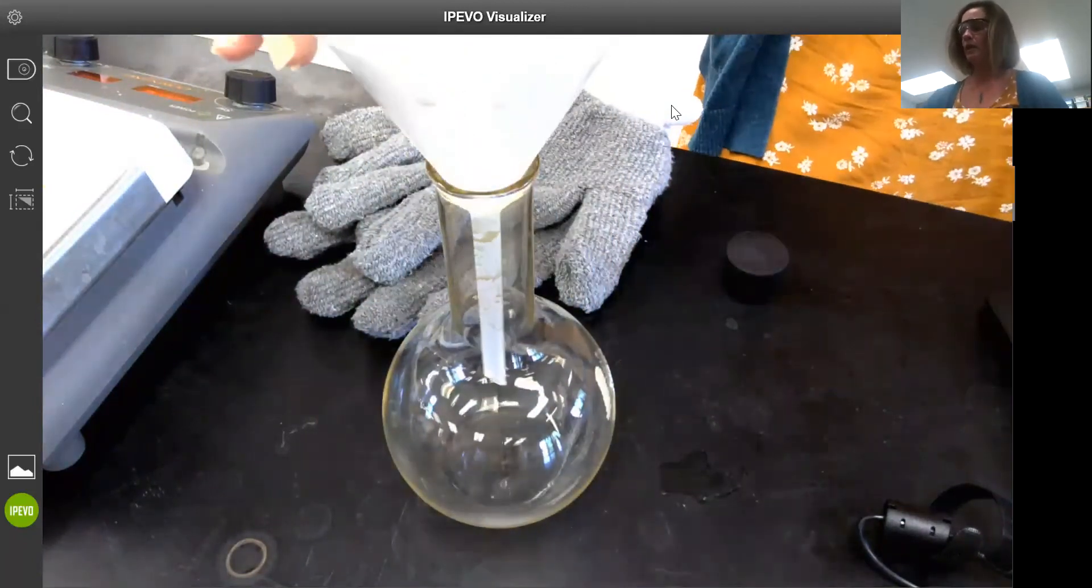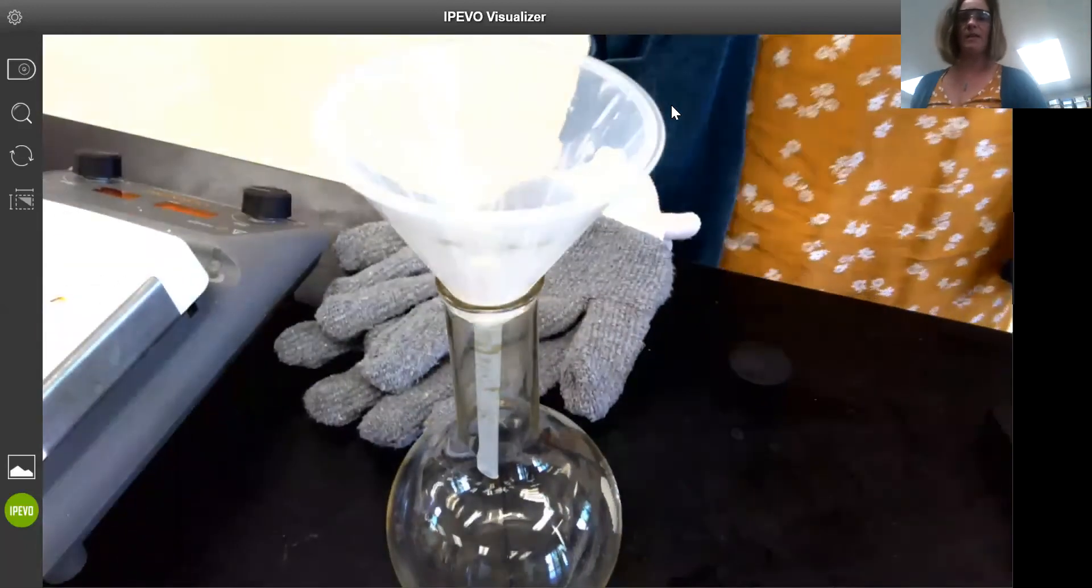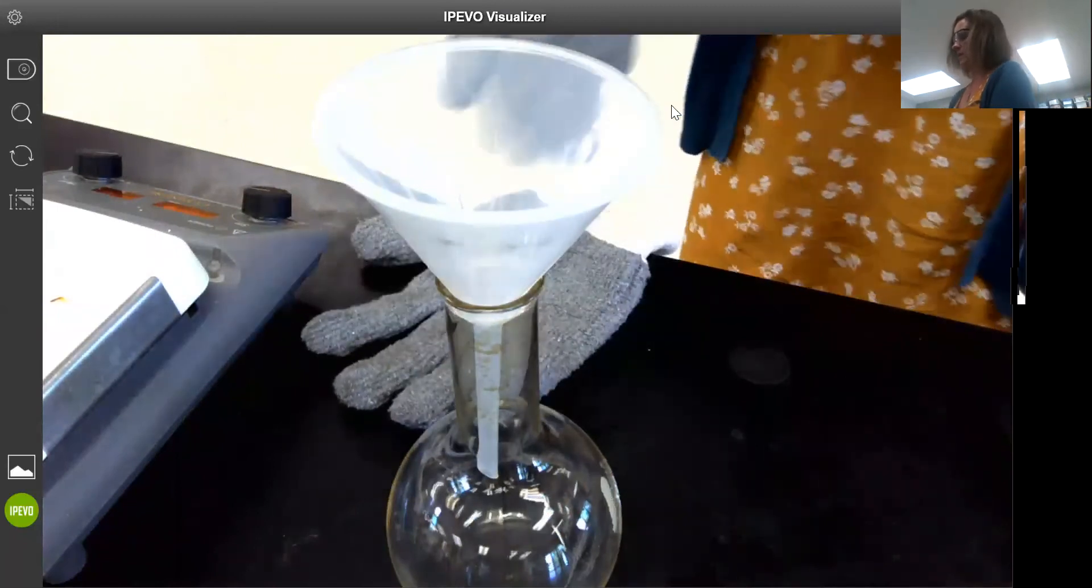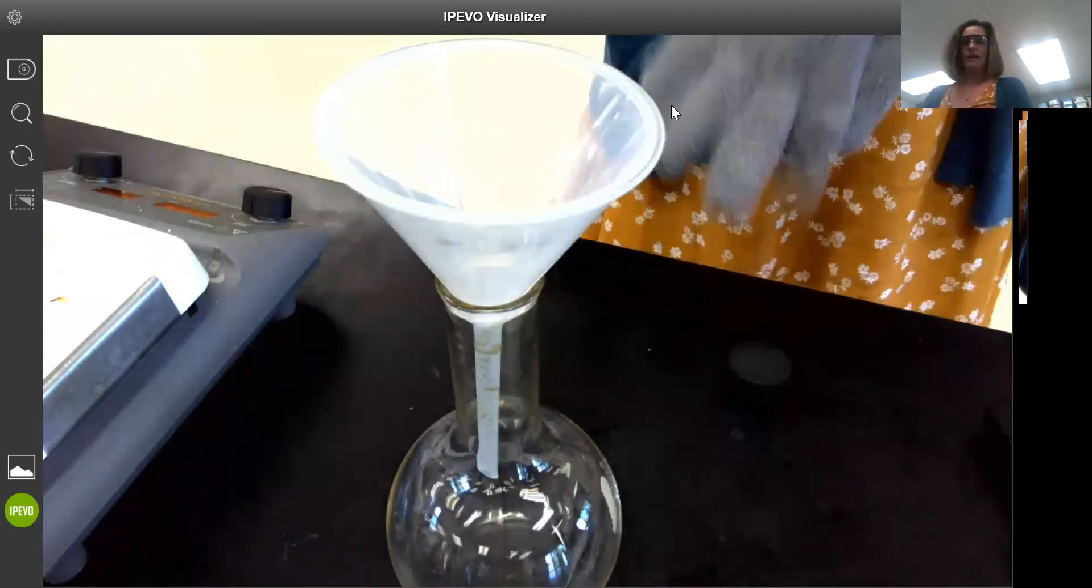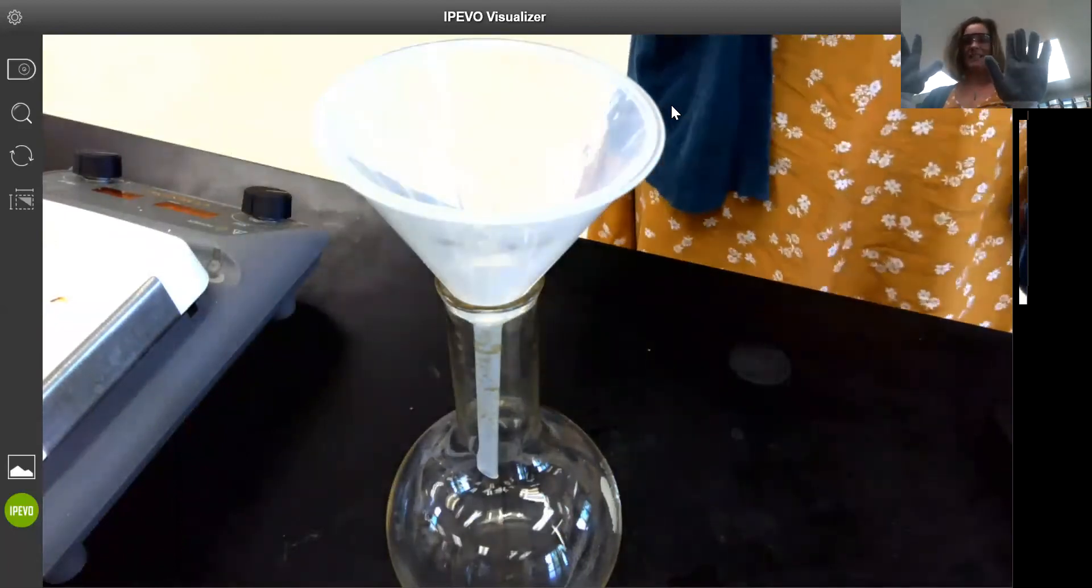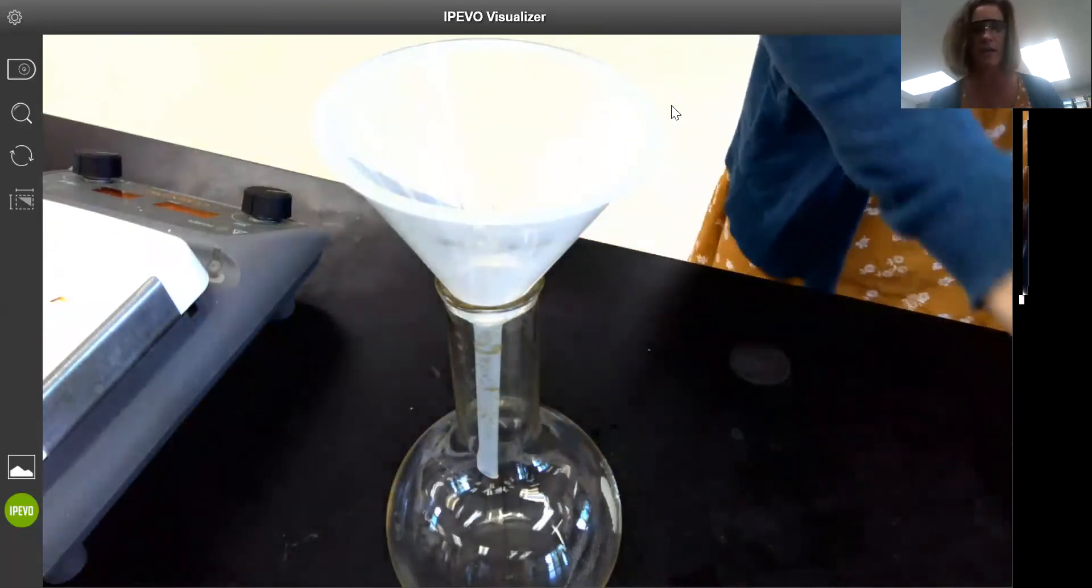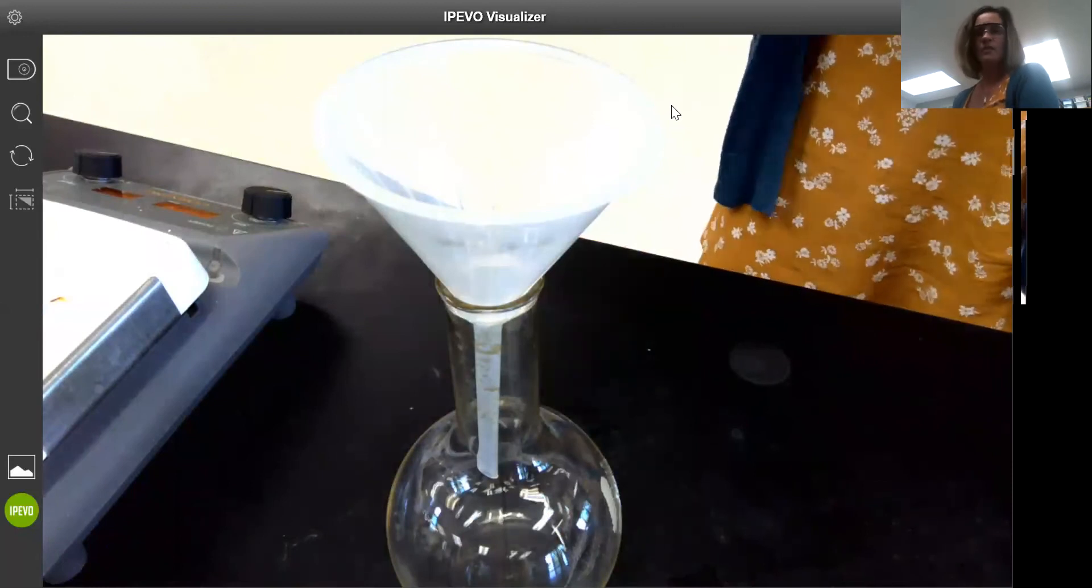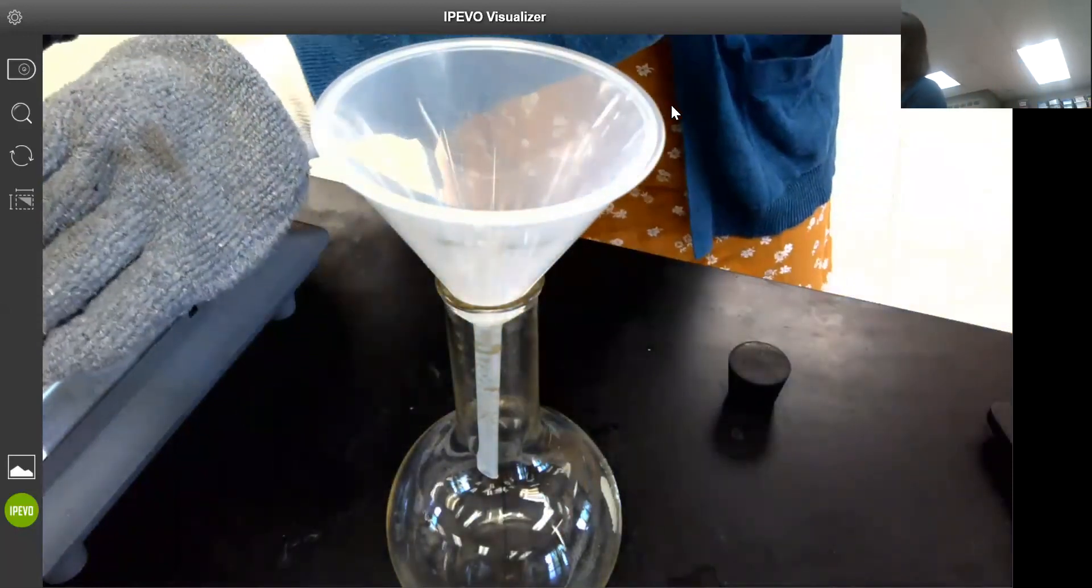I'm just going to use a funnel, a liquid funnel, for transferring the liquid from the beaker into the Florence flask. I'm going to turn my stirring off over here on the hot plate. You can see I'm putting on some heat resistant gloves because this was heated to 90 degrees so that'll be hot to the touch.